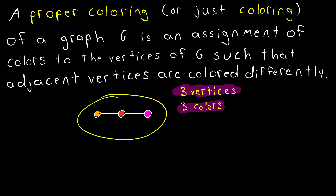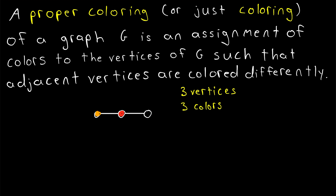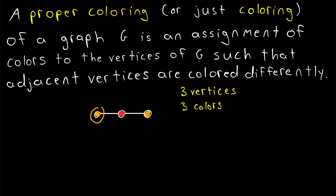Is it possible that we could color this graph with fewer than three colors? It certainly is. This vertex is adjacent to the orange one, so it can't be orange, so we can color it red just like we did before. This third vertex is adjacent to the red vertex, so it can't be red. However, there's nothing stopping this one from being orange as well, because it's not adjacent to the other orange vertex.